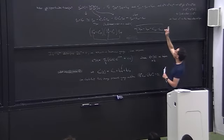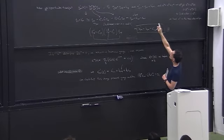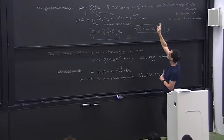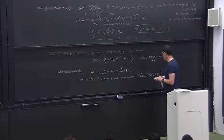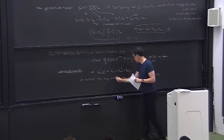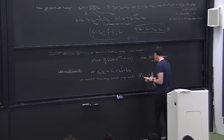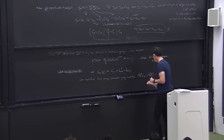That's our gauge condition — the equation at the bottom of the top board — and obviously if I shift the polarization tensor, the change is given by these k terms.